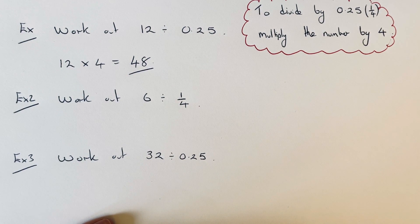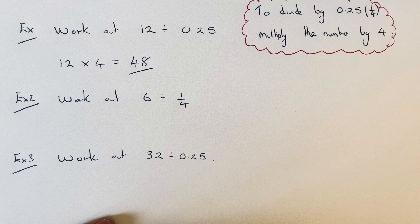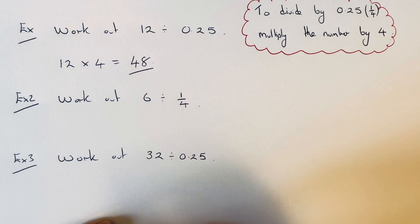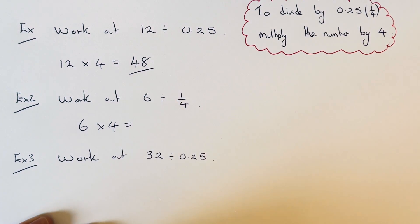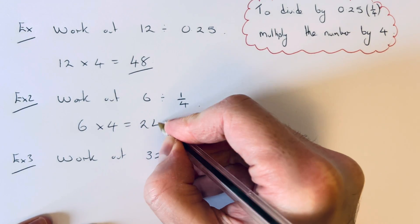Let's have a look at example 2. Again, we've got to work out 6 divided by 1 quarter. So again, we can just multiply our number by 4. So 6 times 4 is 24.